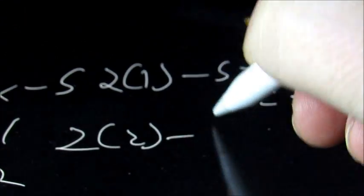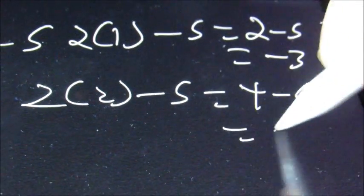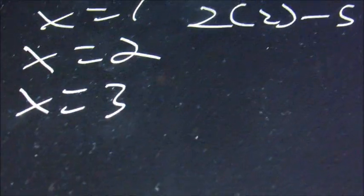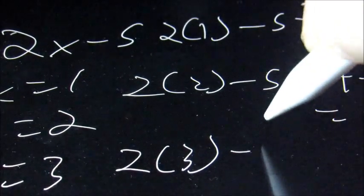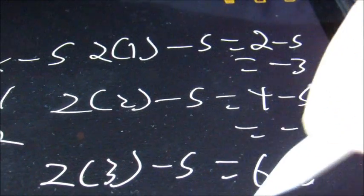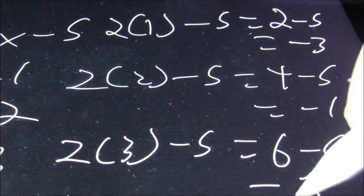And 2 minus 5 is negative 3. Then when x is 2, we're going to have 2 times 2 minus 5. 2 times 2 is 4, minus 5, and that equals negative 1. Then when x is 3, we're going to have 2 times 3 minus 5. 2 times 3 is 6, minus 5, and that equals 1.